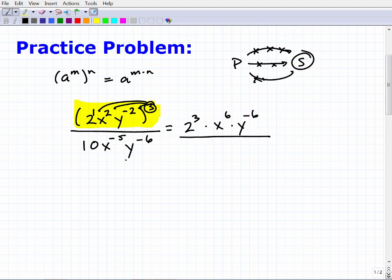And that's going to be all over 10 x to the negative five times y to the negative six. Now I've got these little multiplication dots in here. Typically I wouldn't, but I'm doing that just to emphasize that these are factors. This is a product, right? This is all being multiplied together.